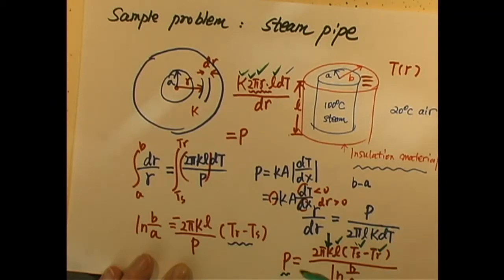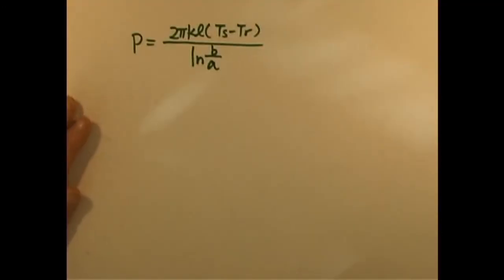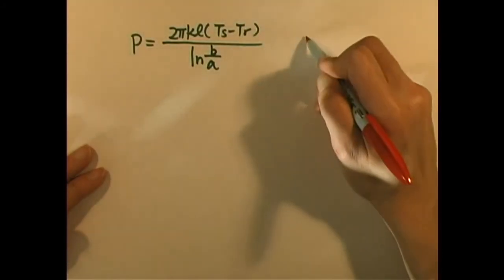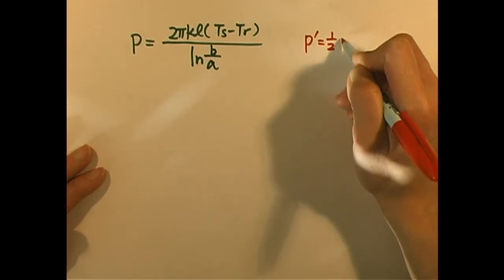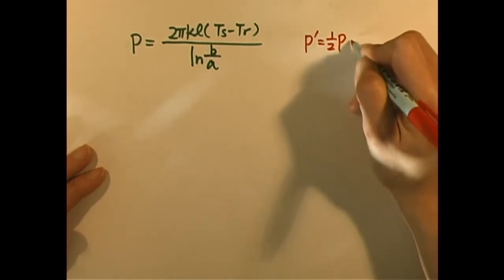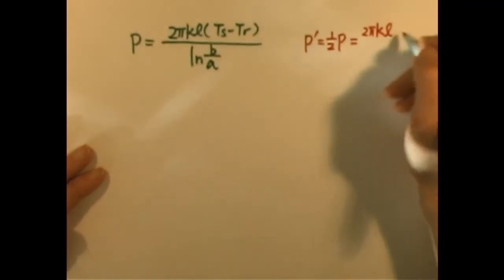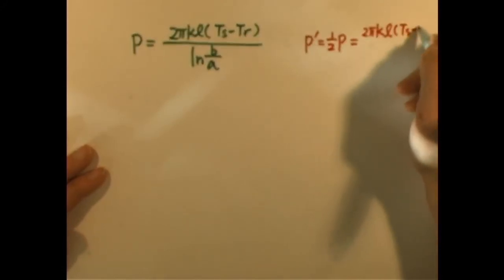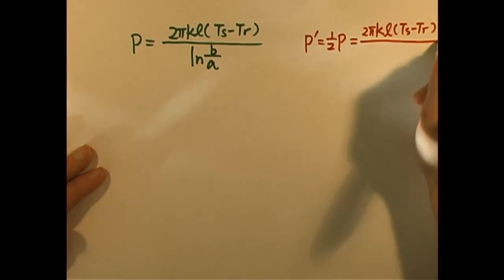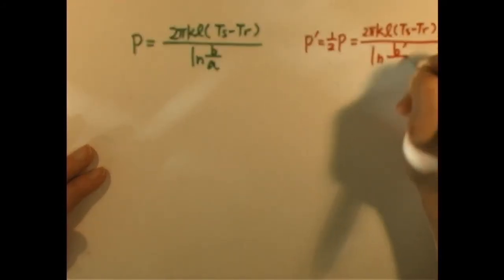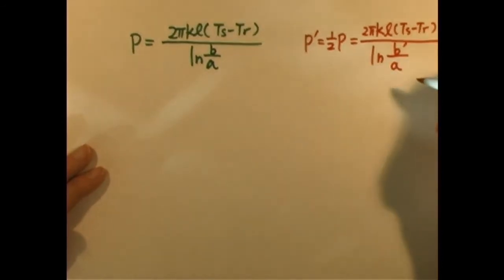There's one more question we can ask. If we want to cut the power in half, how much percent of the insulating layer do we have to increase? Here's the P we got. If we want to decrease P to half, we have a new P which is half of the original. So it requires the same insulating material, same length of pipe. T steam and T room are still the same. Only something is the new B, because the steam pipe size A is still the same.